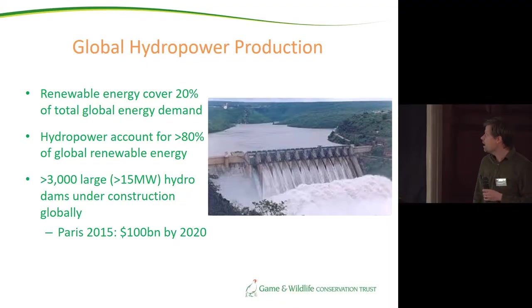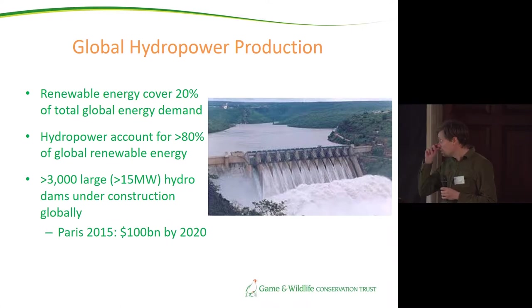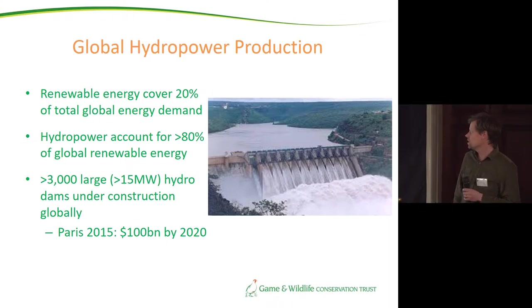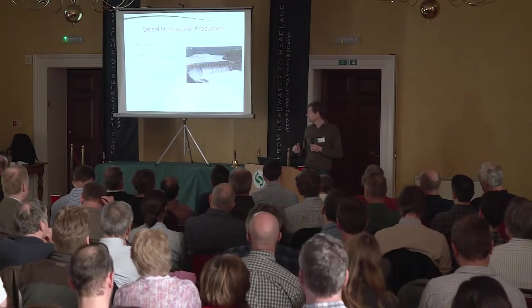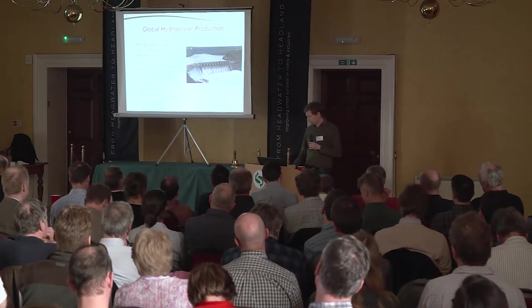It's an area of rapid expansion, and currently there are more than 3,000 developments of very large schemes — that's more than 15 megawatts capacity — under construction. The last part of that has been driven by the United Nations climate deal in Paris, where by 2020 the aim is to find 100 billion dollars a year towards renewable energy in the developing world. They know that developing countries will have higher energy demand in the future, and the aim is to offset that by producing more renewable energy, much of which will come from hydropower.